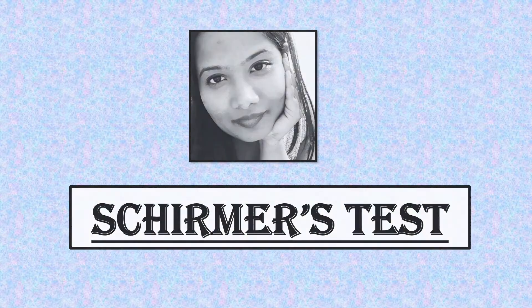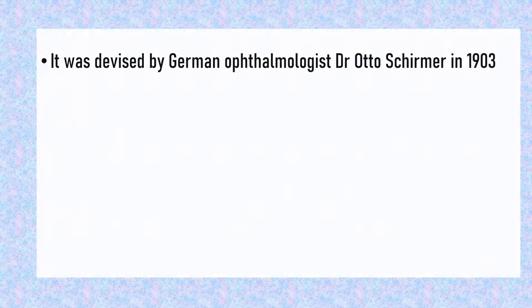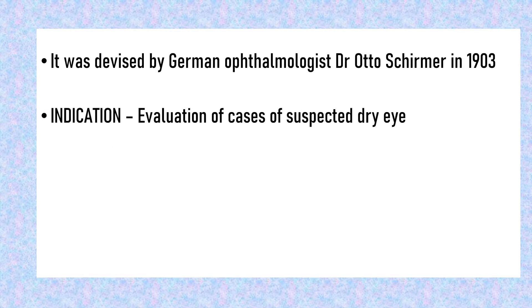Schirmer's test was devised by a German ophthalmologist, Dr. Otto Schirmer, in the year 1903. It is done for the evaluation of suspected cases of dry eye disease.